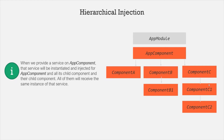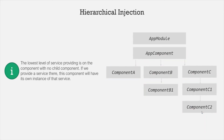That instance will not be injected for the parent component C. Dependency injection does not work in the upward direction — it always works in the downward direction. The lowest level where you can provide a service is a single component with no child components. If we provide a service on a component with no child components, that component will have its own instance of the service, and since it has no child components, that instance will not be available for other components.